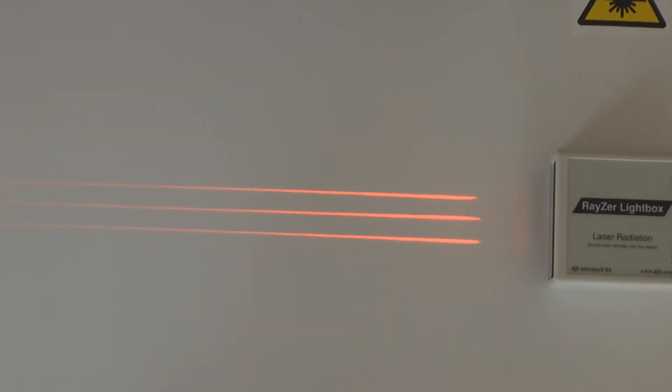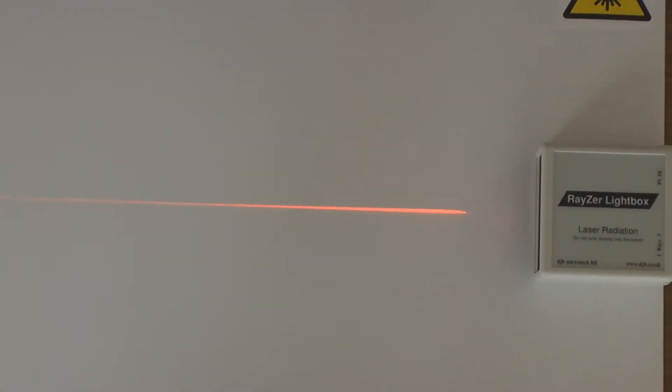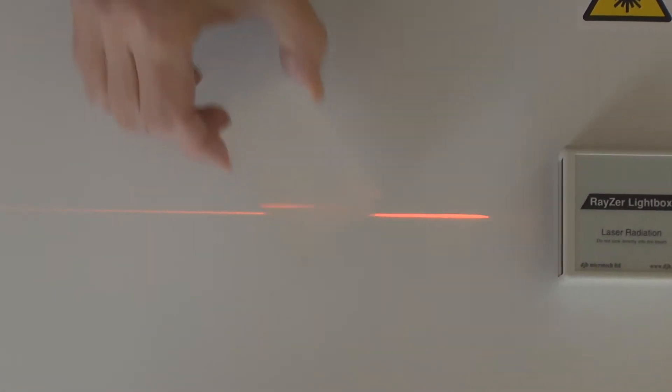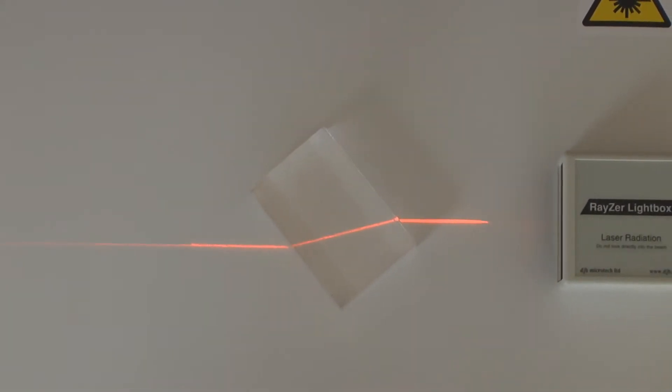Let's switch to one beam. We have a rectangular block and with that we can do Snell's law.